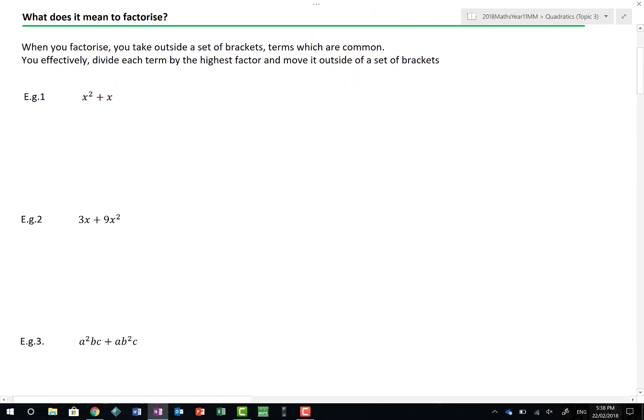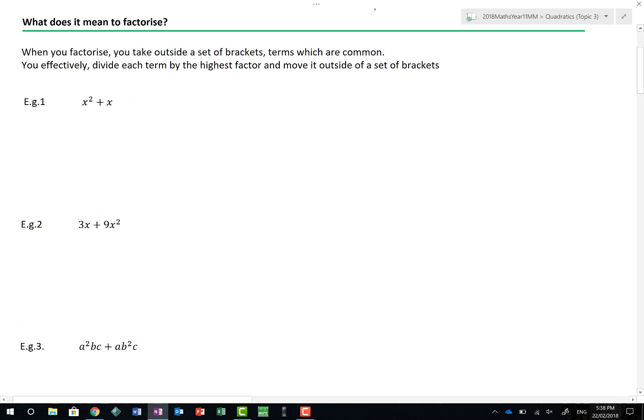What does it actually mean to factorise? I think of it as, when you factorise, you're effectively taking outside a set of brackets terms which are common. You take as much out of a set of terms as you possibly can, those things that are alike. You're effectively dividing each term by the highest factor.